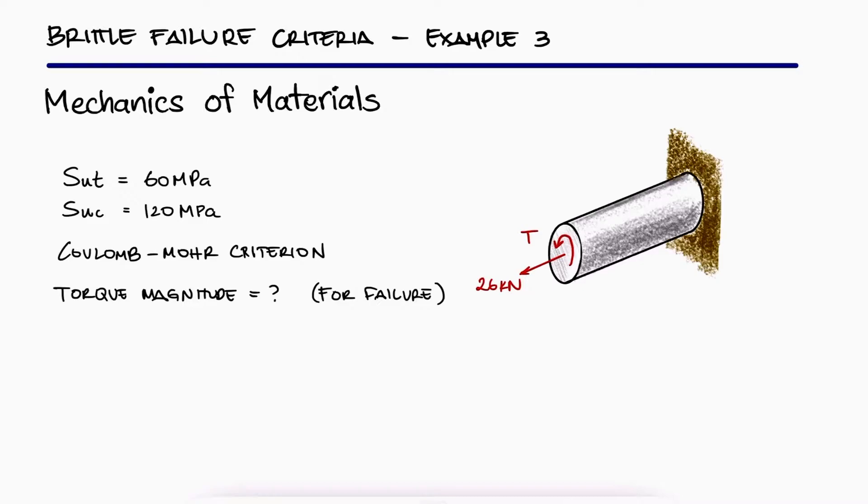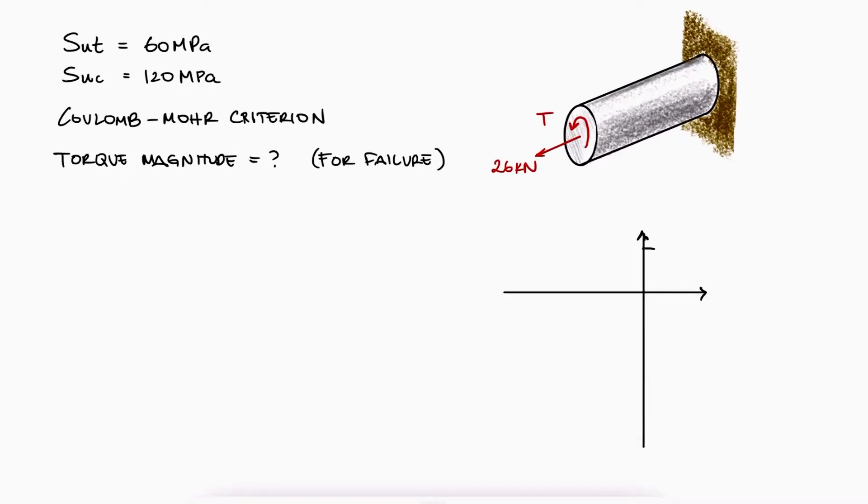This is the first example for the brittle failure criteria main video. The link to that 10 minute video and other 2 minute examples are found in the description below. With the stress envelope for the Coulomb-Moore criterion, we see that we first have to identify in which quadrant the principal stress state is found.